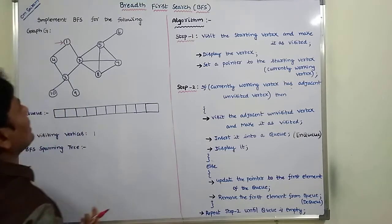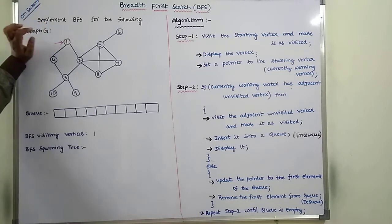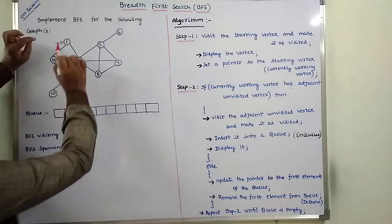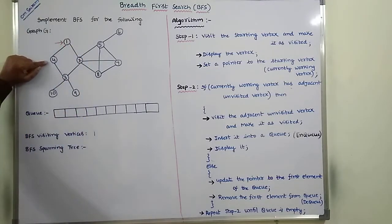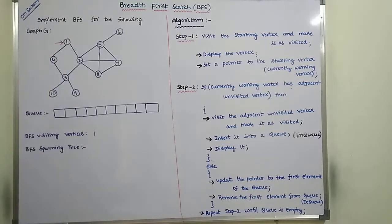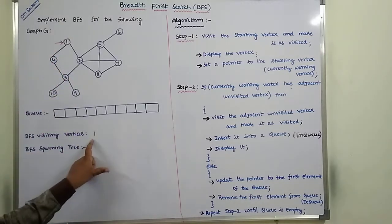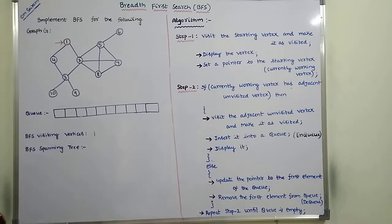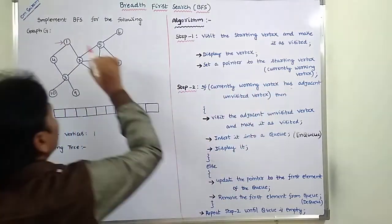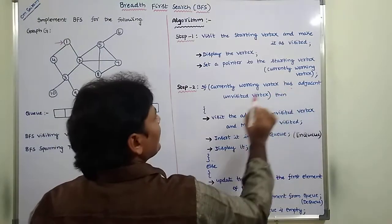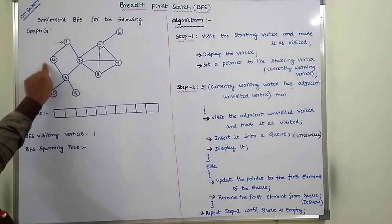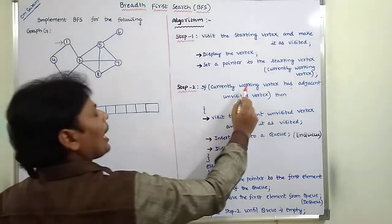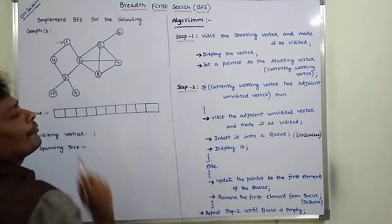We go to step 2. If the currently working vertex has any adjacent unvisited vertices — for vertex 1, the adjacent vertices are vertex 4 and vertex 2. These two vertices are not visited; only vertex 1 is visited. So vertex 1 has adjacent unvisited vertices 4 and 2, and this condition is true.